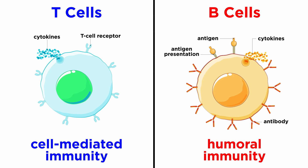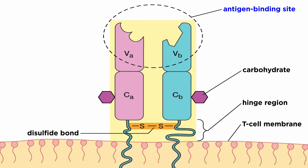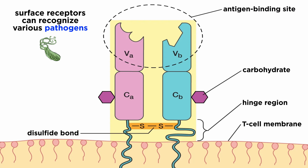As we learned in the previous tutorial, the adaptive immune system utilizes two major types of immune cells, or lymphocytes, those being T cells and B cells. These cells can react to a tremendous variety of antigens, for which they possess a large variety of cell surface receptors that can recognize an unlimited number of pathogens.